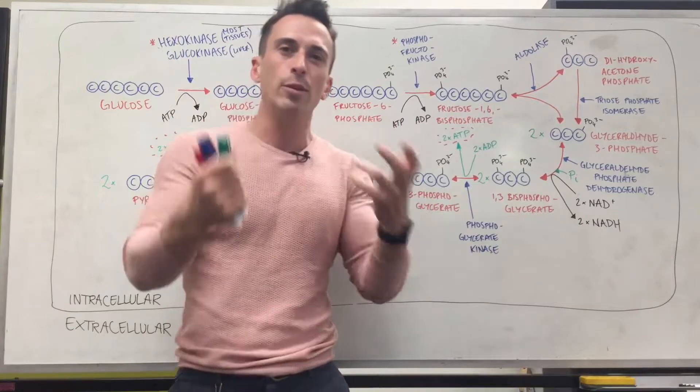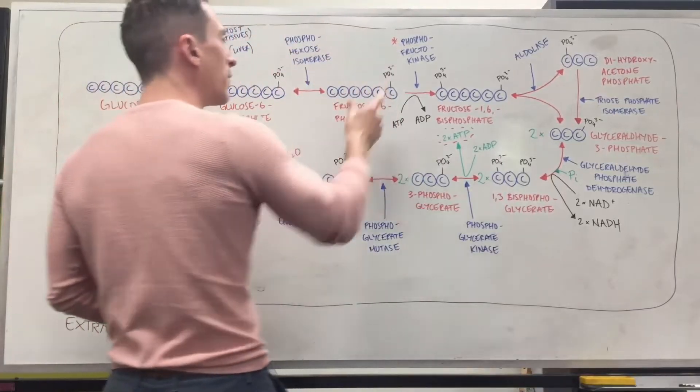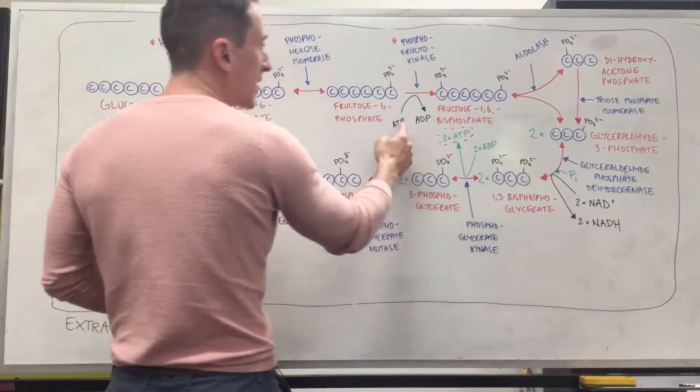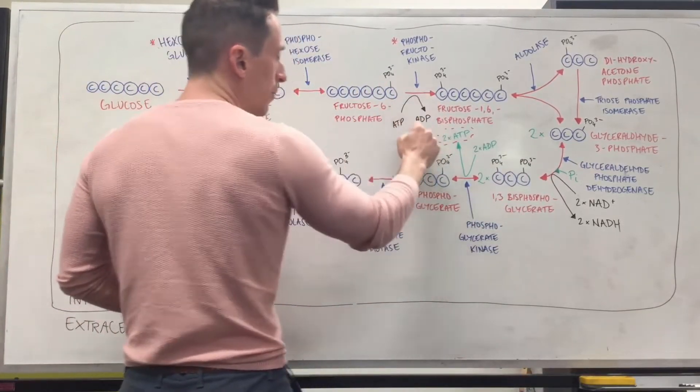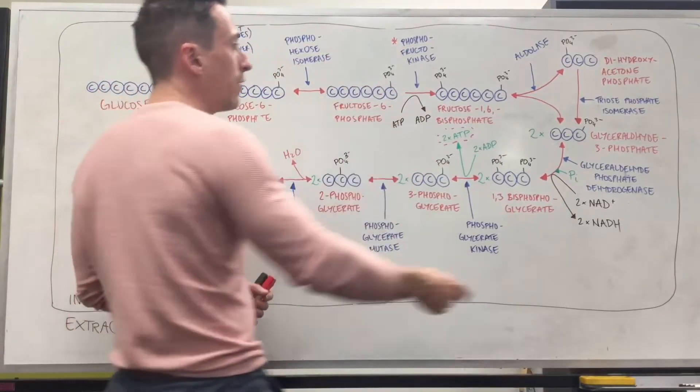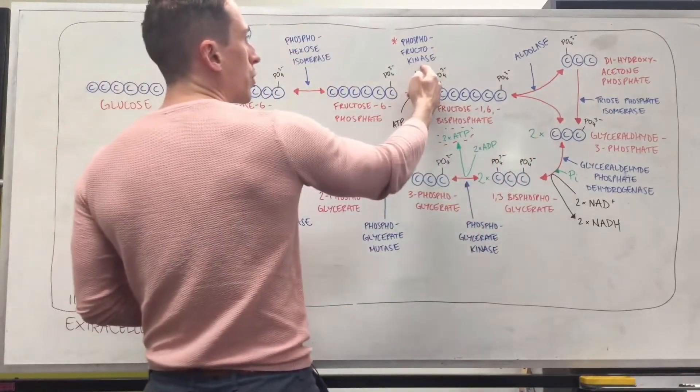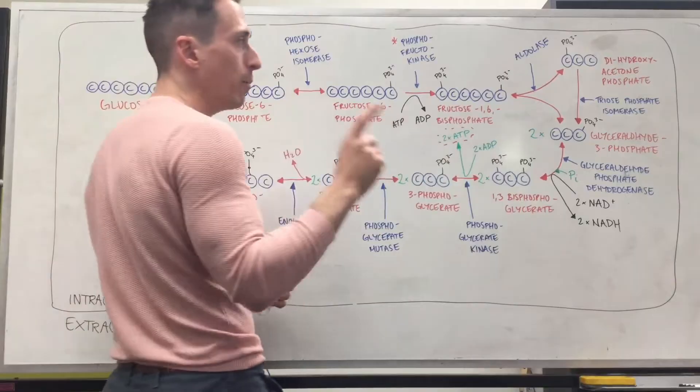So this fructose 6-phosphate, what we do is we need to give it another phosphate. We do that by taking another phosphate from an ATP and we pop it on the first carbon position this time. So now what we have is fructose 1,6-bisphosphate, and we do it with an important enzyme called phosphofructokinase. Again I'll get back to that. Very important.